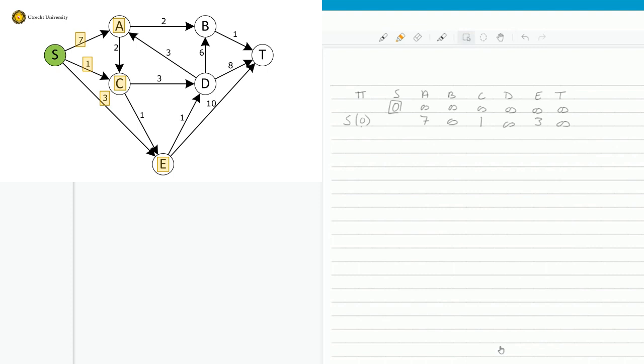So now we look at the smallest value in the table, and that is 1 for node C. So we take C as the next parent. Remember that was value 1. And we are going to look to the nodes that we can reach from C, and that is D and E. For D, we get the distance 3, so 1 plus 3 is 4. And for node E, we have 1 plus 1 is 2, so value 2. Remember that for A we already had 7, B we couldn't reach so it is still infinite, C we already had, and T is still infinite.